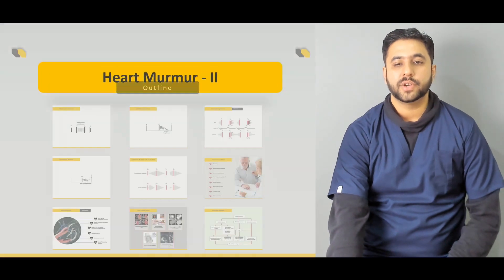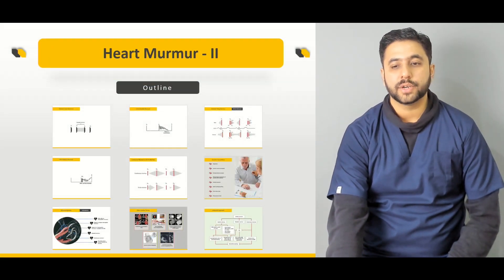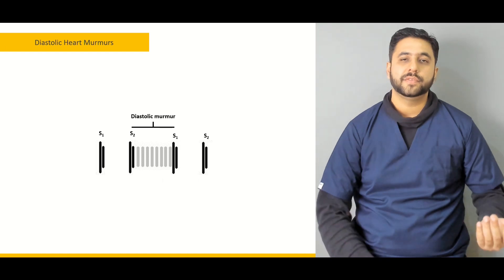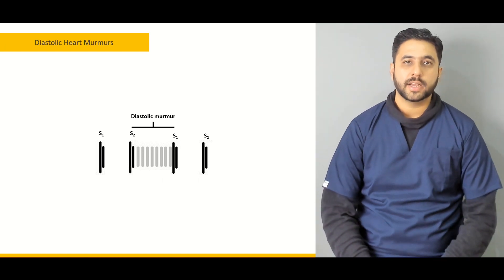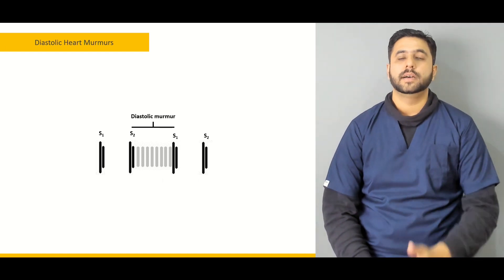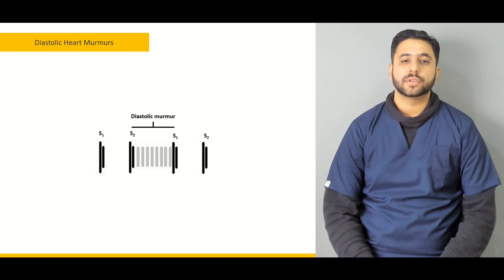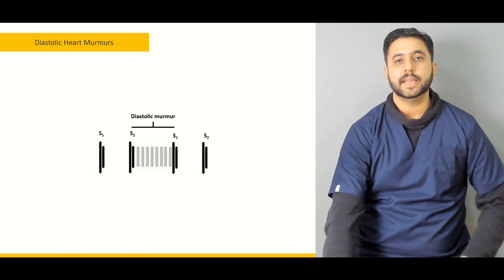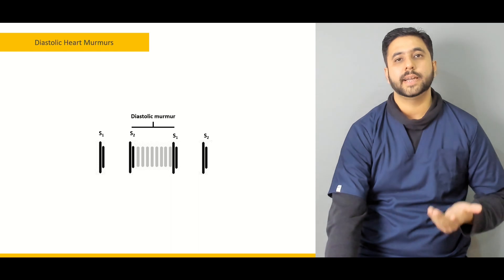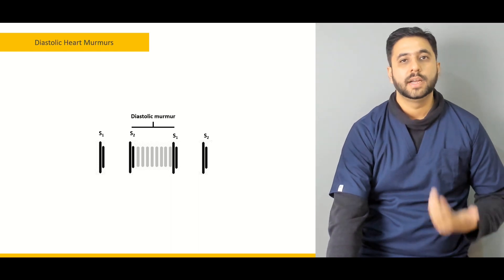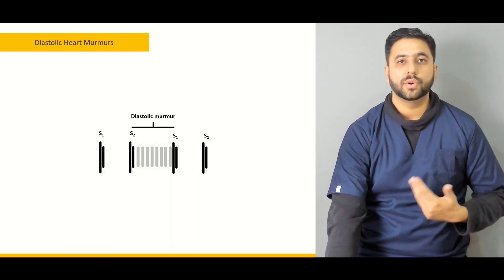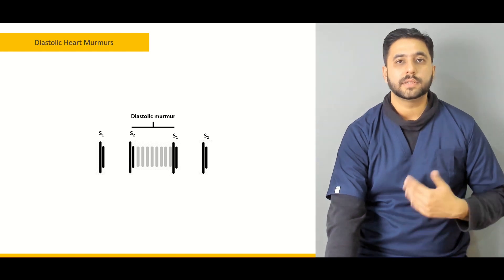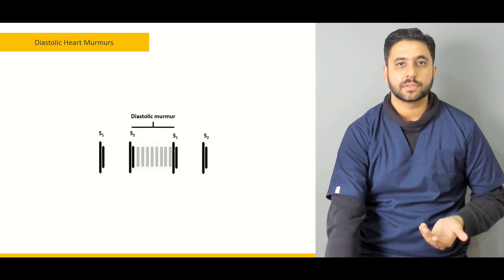Let me give you an outline of how we are going to proceed in this lecture. We left off with completing our discussion on the systolic heart murmurs. So in this lecture, we are going to start off with the discussion of the diastolic heart murmurs — what is diastole, what happens during diastole, what are the valves involved, which valves are closed, which valves are open, and what are the various murmurs occurring during the diastolic process.